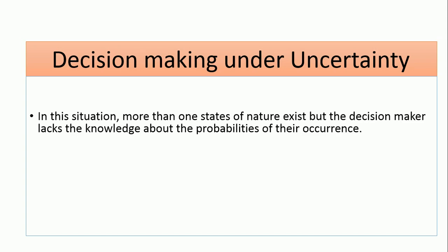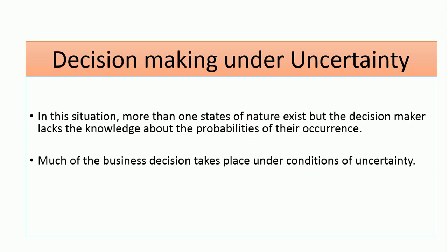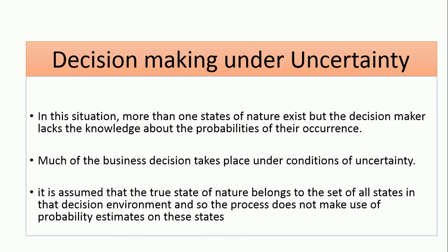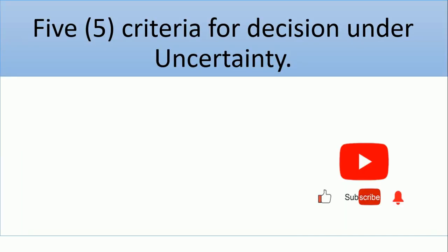When the decision is uncertain, you have more than one state of nature for each of the decision alternatives, and you lack knowledge about the probabilities of occurrence. Much of business decision-making takes place under conditions of uncertainty. It is assumed that the true state of nature belongs to the set of all states in that decision environment, and the process does not make use of probability estimates on those states.